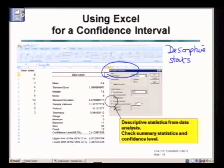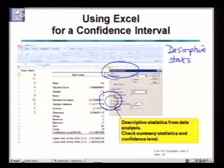You'll notice then, if you tick the confidence level for the mean and the summary statistics, as I've done down here, Excel will give you the information which includes a confidence level.